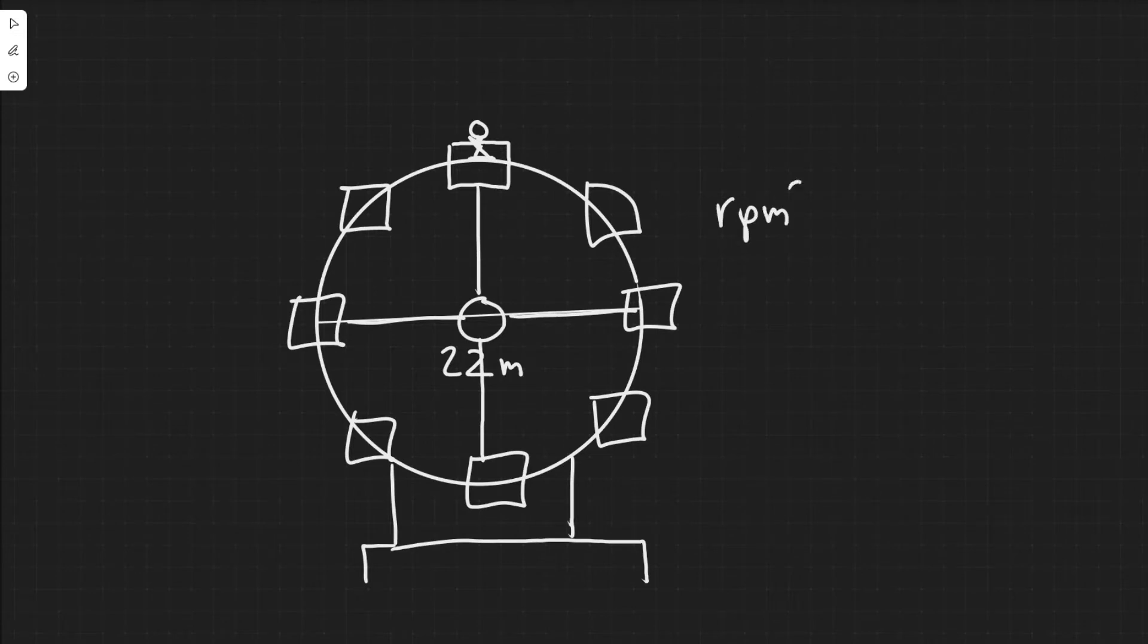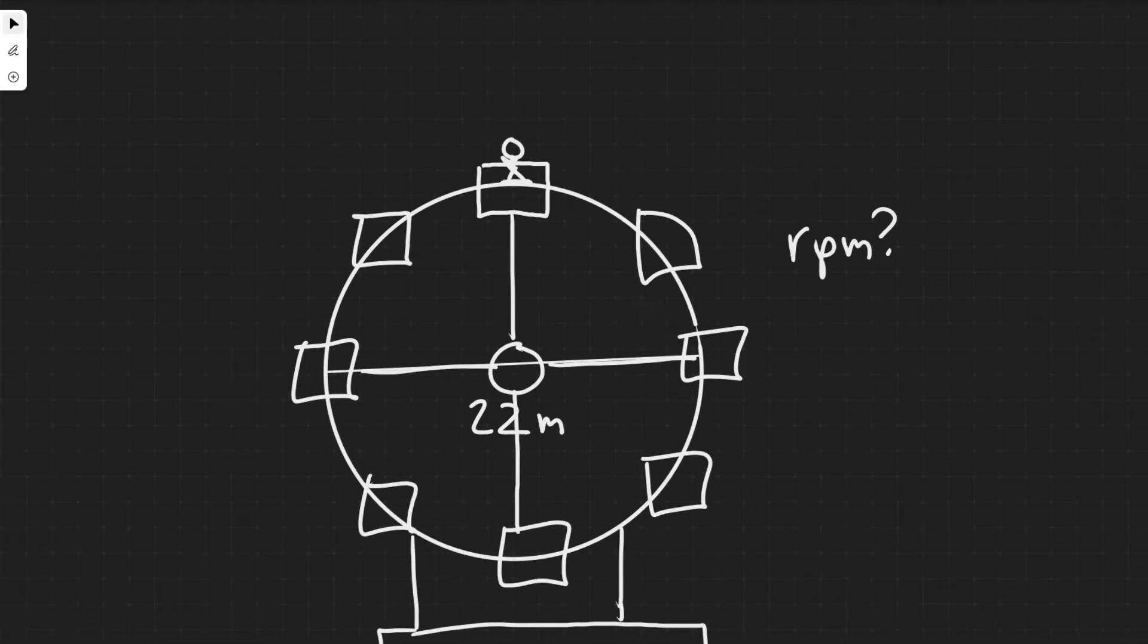And so the way we're going to do this is by starting with the free body diagram of what the person would be feeling if they were up here at the top, because that's what they say at the top. And so what we want to do is label the forces acting on them. So we know there's going to be two forces. So we have the force due to gravity, mg, and so mg is going to point down, this is the force due to gravity.